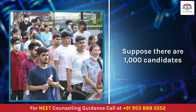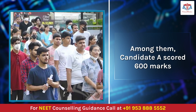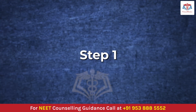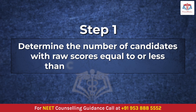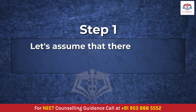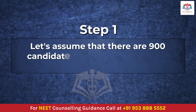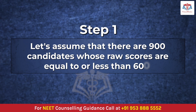Suppose there are 1,000 candidates who appeared for the NEET exam, and among them Candidate A scored 600 marks. Step one: determine the number of candidates with a raw score equal to or less than Candidate A's score. Let us assume that there are 900 candidates whose raw scores are equal to or less than 600.